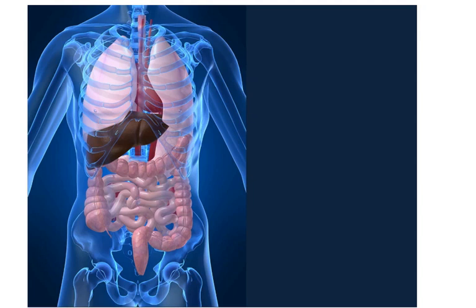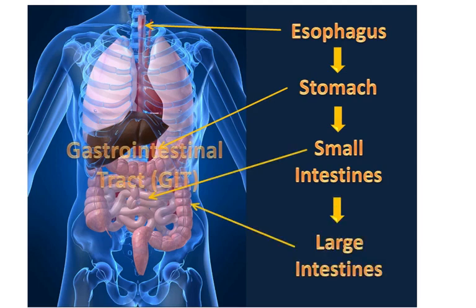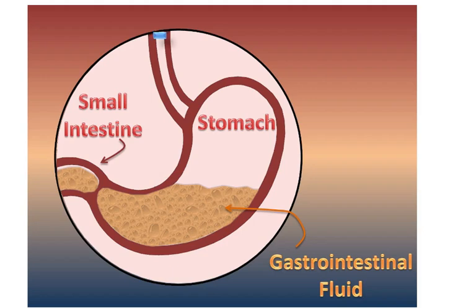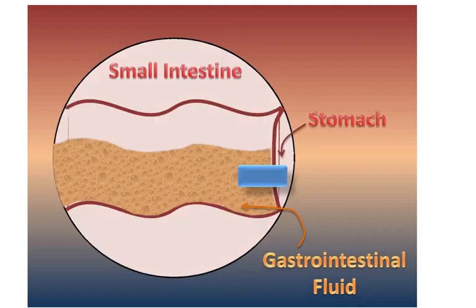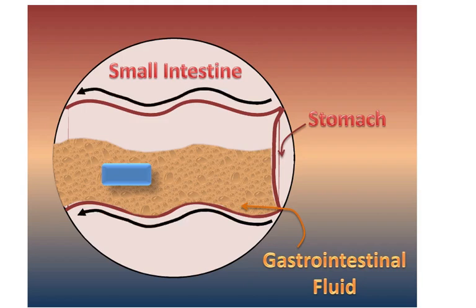When we swallow something, it begins a journey through your body's internal plumbing system, which is essentially a hollow tube running through your body called the gastrointestinal tract. The tablet is carried along in an acidic fluid which contains things that the body uses to help us digest food and other things that we swallow. As this fluid moves from the stomach into the small intestines, muscular contractions help mix up all the contents, breaking things down into smaller and smaller sizes.